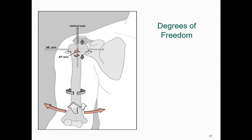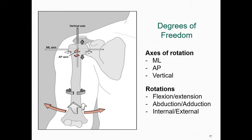The next concept needed to talk about movement is degrees of freedom. The term degrees of freedom commonly refers to the number of independent directions of movement allowed by a joint. Here we see the right glenohumeral or shoulder joint — a joint with many degrees of freedom. The motion around this joint can be described using three axes of rotation and three directions of rotation. Rotations about the medial-lateral axis are either flexions or extensions. Rotations about the anterior-posterior axis are either abductions or adductions. Rotations about the vertical axis are either internal or external rotations.